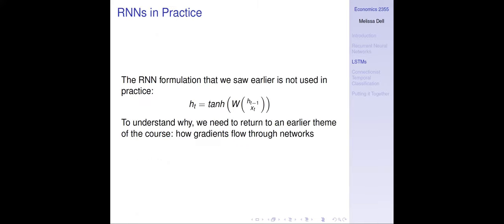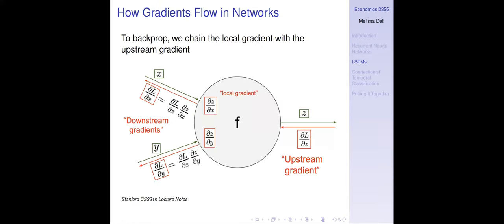The vanilla RNN formulation — projecting history and input, adding them, and squashing through tanh — is not used in practice. To understand why, we return to how gradients flow through networks. Backpropagation is an application of the chain rule: we estimate gradients to update parameters. In the chain rule, the partial derivative of loss with respect to x equals the partial of loss with respect to z times the partial of z with respect to x. As we backprop, we multiply at each step by the local gradient times the upstream gradient.